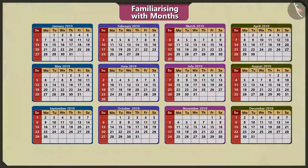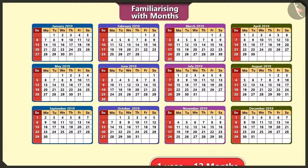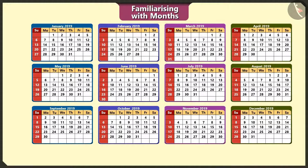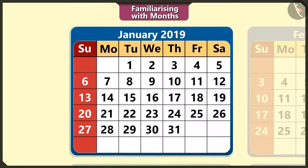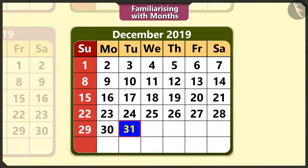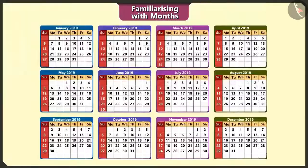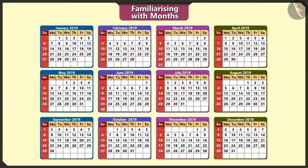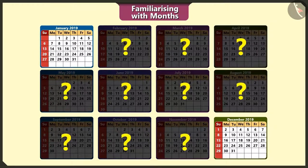Chotu, similarly, there are 12 months in a year. The first day of the year always starts with 1st of January and the last day is the 31st of December. The first month is January and the last month is December. What are the months between these two months?